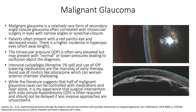While the literature suggests that half of malignant glaucoma cases can be controlled with medications and laser alone, it is my experience that surgical intervention with iridozonulohyaloidectomy, or IZH, is often required and should not be delayed if less invasive approaches are not successful. Posterior vitrectomy with meticulous anterior hyaloidozonulectomy is an approach that can be employed if all the above techniques fail, although IZH has been quite successful in our hands.